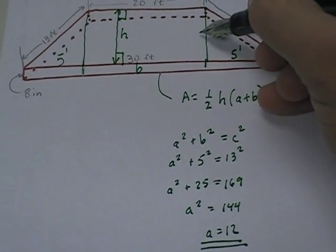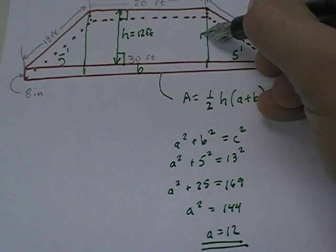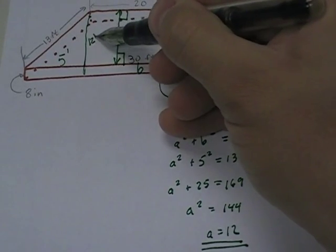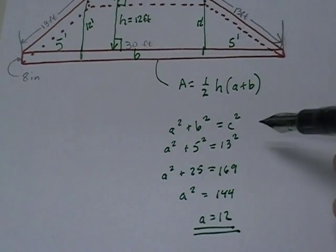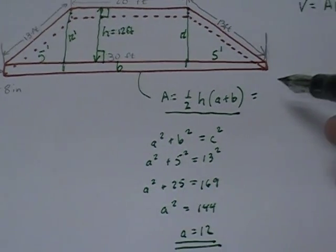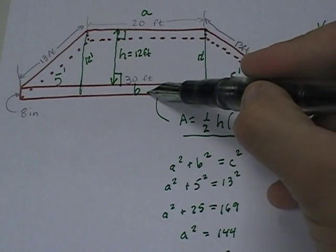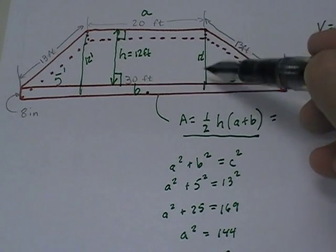So what does that mean for me? That means this is 12 feet. 12 feet and 12 feet. So all of that goes back to this. So now I take my area formula, and I plug in what I know. The top is 20, the bottom is 30, and the height is 12.